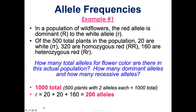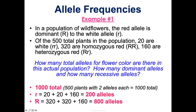To find how many recessive alleles there are: the 20 plants that are little r little r each have 2 little r's, so that's 40. The 320 big R big R plants have no little r's. The 160 heterozygous each have one little r, so that's 160. So 40 plus 160 gives 200 recessive alleles. For dominant alleles: the 320 homozygous dominant each have two big R's — 640 total — and the 160 heterozygous each have one big R — 160 more. So 640 plus 160 equals 800 dominant alleles. 200 plus 800 equals 1,000, confirming our total.